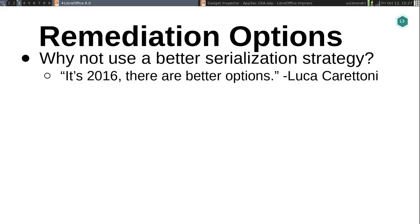So how do you remediate a deserialization vulnerability? If you look at that talk Luca gave, his response was: it's 2016, there are better serialization options than the ObjectInputStream, and really any of these other libraries that have these issues. I don't know the last time I programmed against an XML SOAP interface, but hopefully that's not something people are doing for new applications. If you have the option of using a better serialization strategy, that is absolutely the right way to remediate this problem.